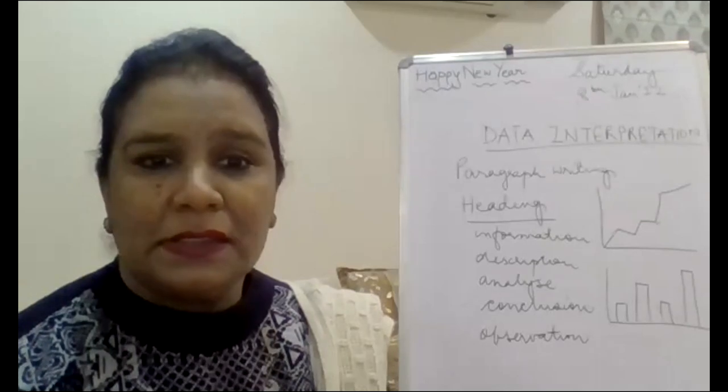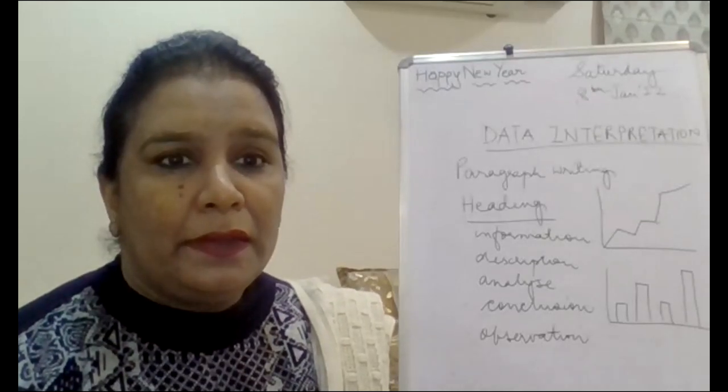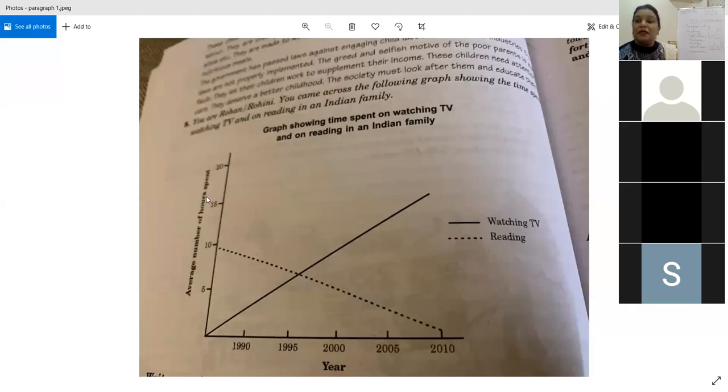All of you look at the screen, please. Right. Now, this is a graph. What is this graph? It is showing time spent on watching TV and on reading in an Indian family. There are two lines over here. One is this dark line and the other is the dotted line. What is the dark line representing? It's about watching television. And what is it? It is time. So, it is hours spent on watching television and the dotted line is the hours spent on reading.